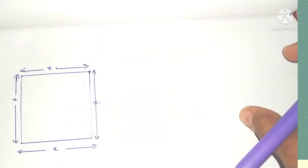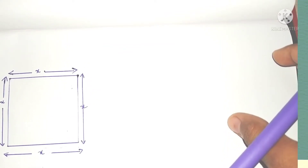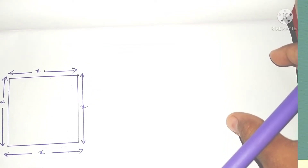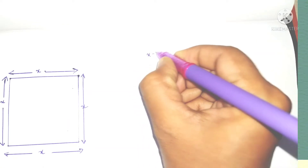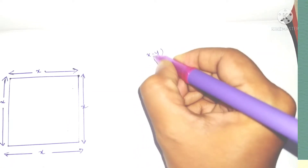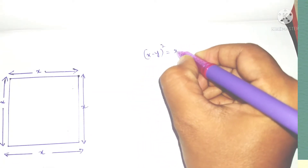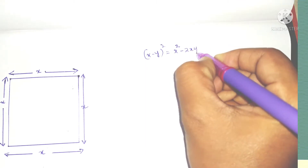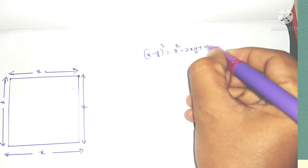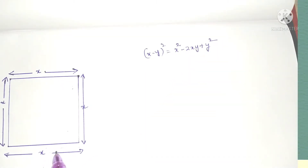Hello students, welcome to my channel. Today in this video we are going to see the geometrical proof of the algebraic identity: x minus y whole square is equal to x squared minus 2xy plus y squared.